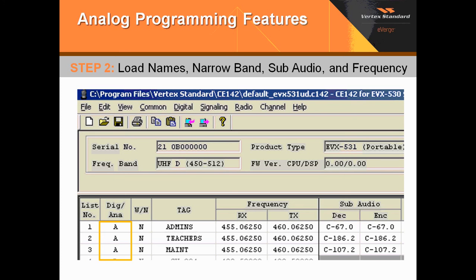Next, we're going to select A for analog operations. And now that it's 2013, North America, we're going to set our narrow band. After that, we'll type in our tags, which are basically the channels' names. Then you have your RF frequencies — notice they're all the same for all three channels. And then we'll program in the subaudibles. This should all be pretty much review for the majority of you.